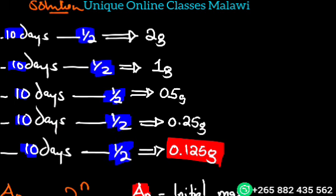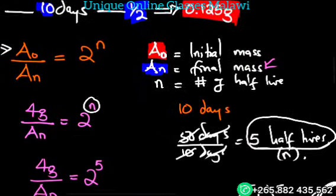You take that fraction times the initial mass, and you are going to get the final mass.